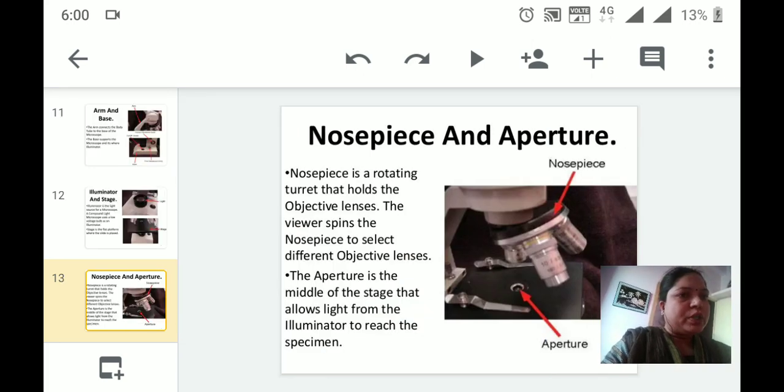Nosepiece and aperture: The nosepiece is the rotating turret that holds the objective lenses. The microscope that we are having contains three objective lenses of 10x, 45x, and 100x. The viewer spins the nosepiece to select different objective lenses. The aperture is the middle of the stage that allows the light from the illuminator to reach the specimen.